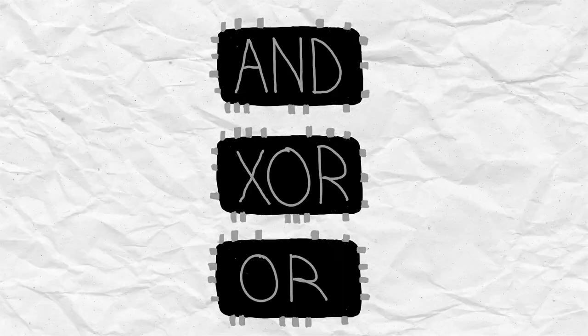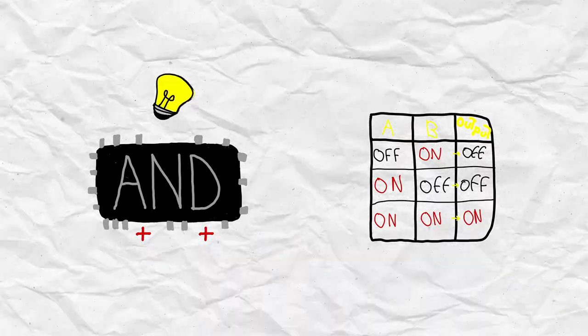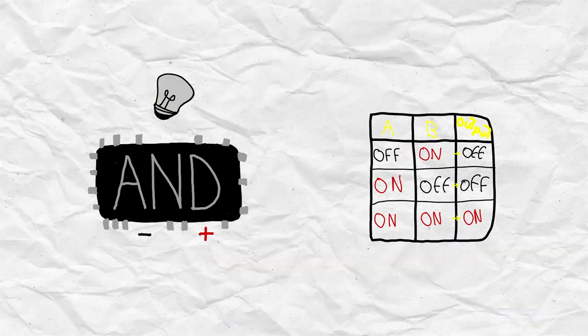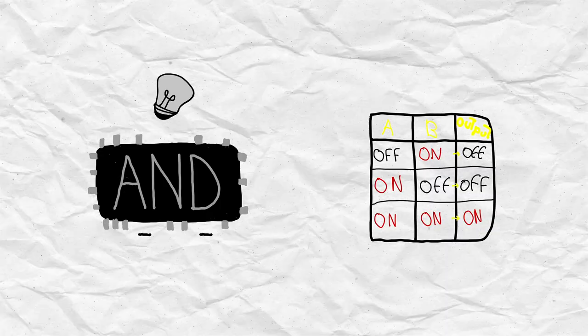We're going to stick to three types of Logic Gates: AND, XOR, and OR. AND Gates require both inputs to be on to send power out. If one is on and one is off, it will not work. If both are off, same thing.